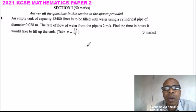So we have question number 1. An empty tank of capacity 18,480 liters is to be filled with water using a cylindrical pipe of diameter 0.028 meters. The rate of flow of the water from the pipe is 2 meters per second. Find the time in hours it will take to fill the tank. Take pi to be 22 over 7. This is 3 marks.